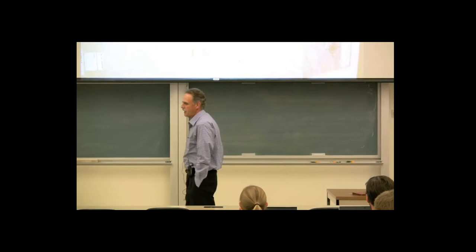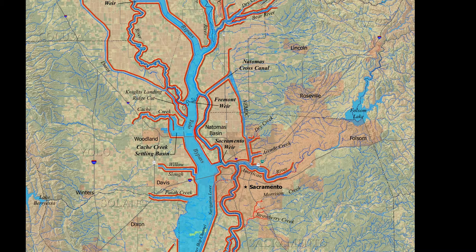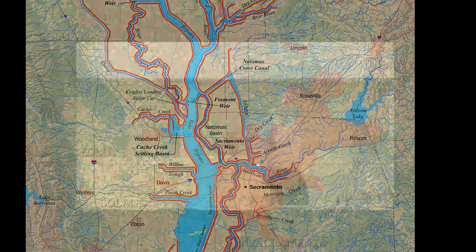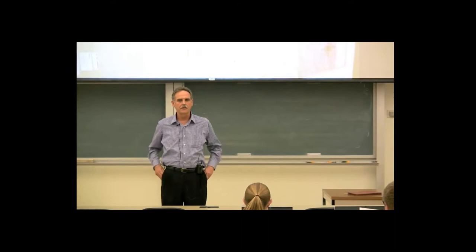The first thing to notice is this is an incredibly vast, complex system. All those red lines on the map are levees, and they're all part of a commonly administered system administered by the state of California through the Central Valley Flood Protection Board, with sort of joint jurisdiction with the Army Corps of Engineers.